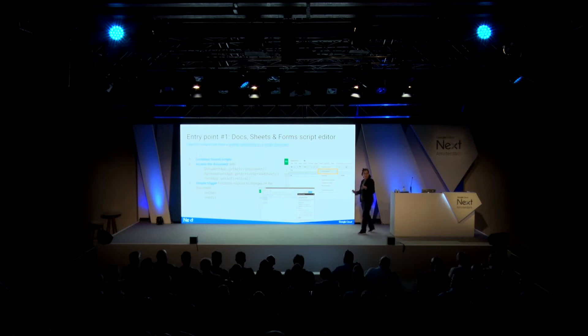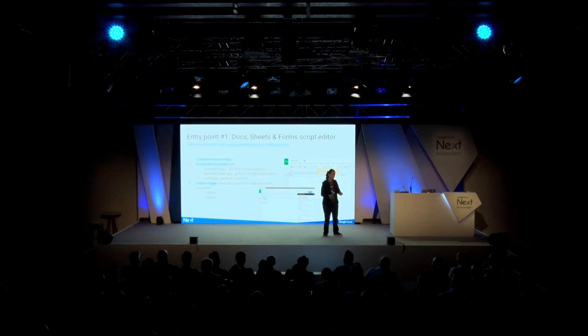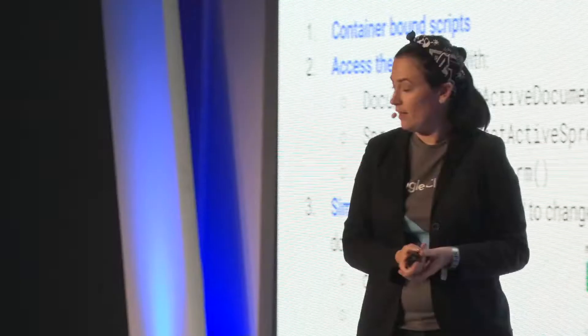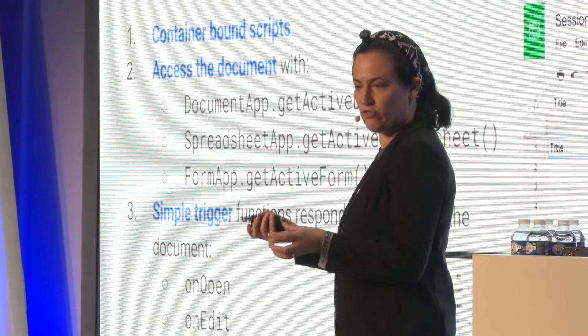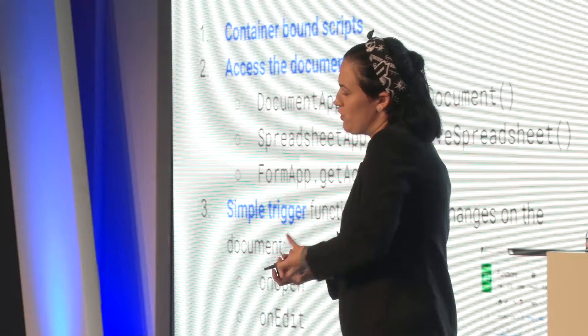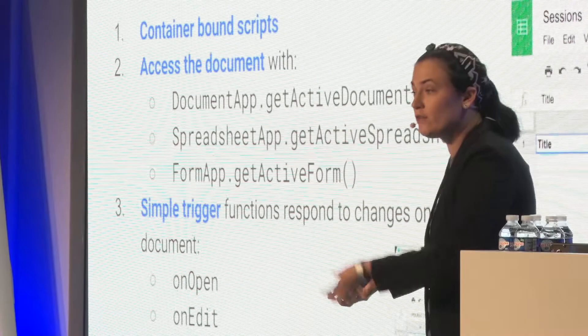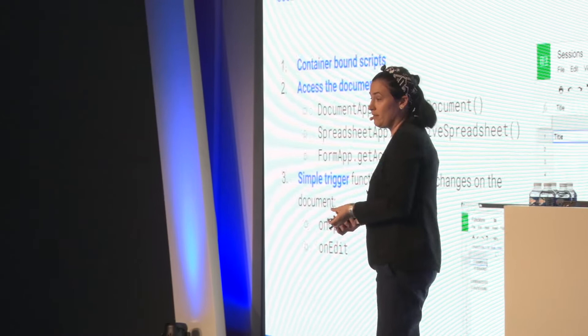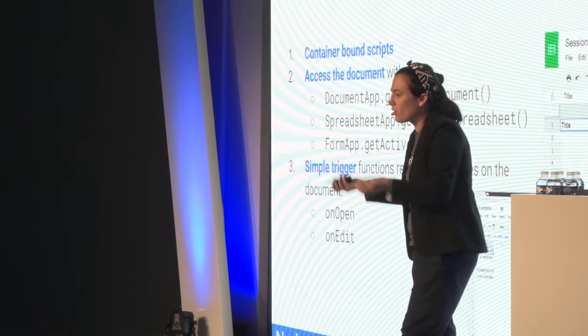In general, there are four different entry points for writing Apps Script code. The most common one is when you have a document or a sheet and want to write scripts for that particular document or sheet - there is a relation between your code and that sheet. We call that a container-bound script. You would say DocumentApp.getActiveDocument() or SpreadsheetApp.getActiveSpreadsheet(), and then write triggers, like executing code every time you open or edit the document.